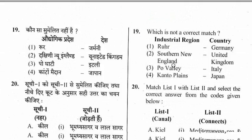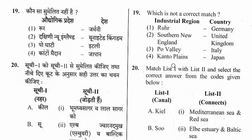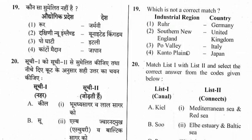Question 19: Which is not a correct match — industrial region and country? The incorrect match is the second one. The rest are correct: Ruhr in Germany, Po Valley in Italy, and Kanto Plains in Japan.